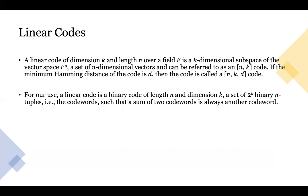The last math concept is linear codes. A linear code of dimension k and length n over a field F is a k-dimensional subspace of vector space F^n. F^n is a set of n-dimensional vectors, and this can be referred to as an [n, k] code. If the minimum Hamming distance is d, then the code is an [n, k, d] code. We're going to mainly use binary codes of length n and dimension k, which is a set of 2^k binary n-tuples, or code words, such that two code words summed together give another code word.